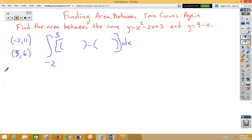So now we're ready to go ahead and type in 9 minus x. And we're going to have x squared minus 2x plus 3. Now we want to write this out because AP is going to look for that and they're going to give us points for that.